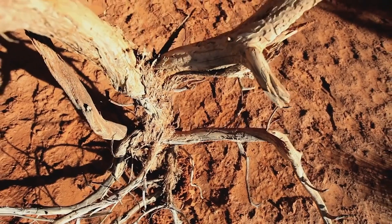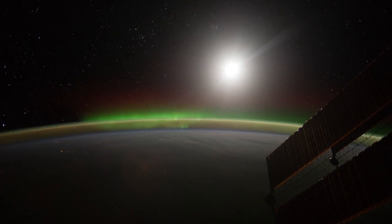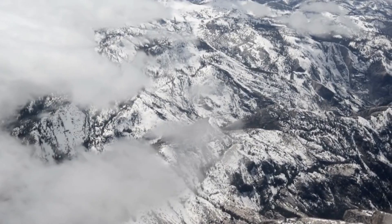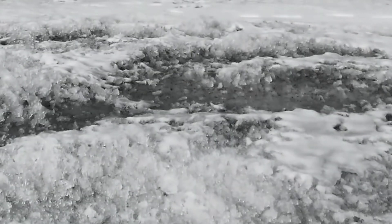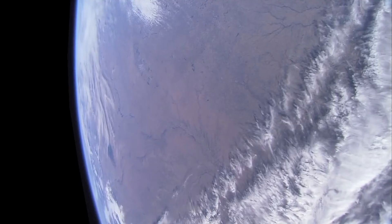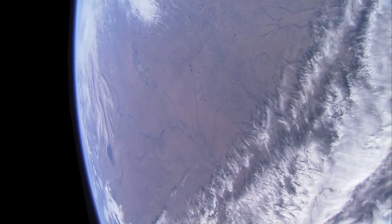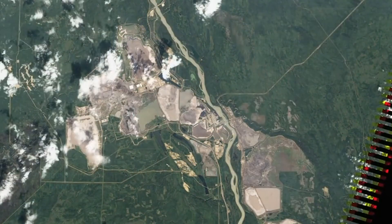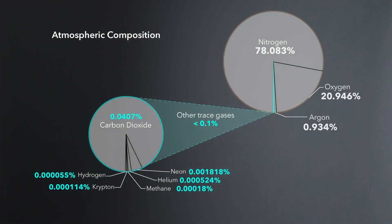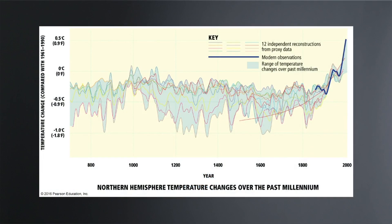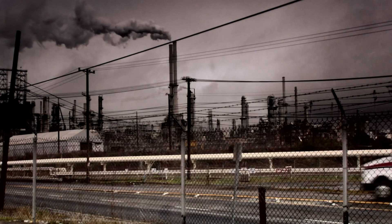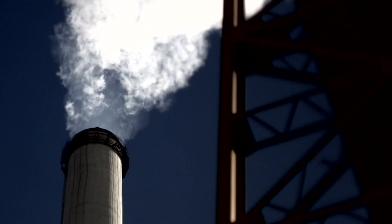We'll begin with the principles of atmospheric science. We'll talk about how climate data is collected, the trends that these data show, and how do we look for signals of climate change in the data. We'll learn how to do basic computations and to use theoretical models of the climate system to address questions about future climate change.